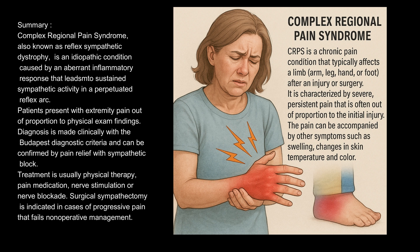Treatment is usually physical therapy, pain medication, nerve stimulation, or nerve blockade. Surgical sympathectomy is indicated in cases of progressive pain that fails non-operative management.